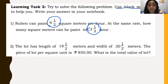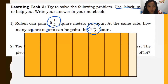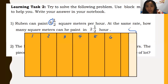Let us represent 6½ using 7 columns. We draw 6 full columns — these 6 represent the 6 whole units. Then the remaining column is split in half to represent the ½. So we now have 6 and ½ shown in the block model.